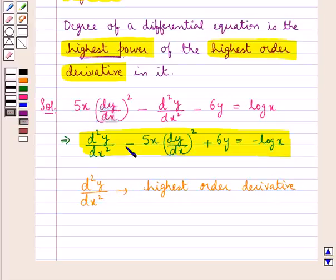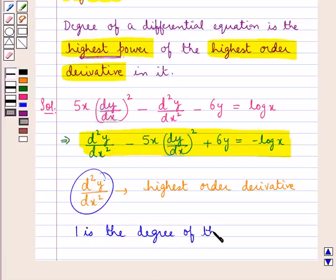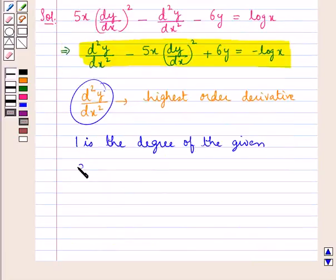And in the equation, as we know, the highest power of this highest order derivative is 1. Therefore, we say that 1 is the degree of the given differential equation.